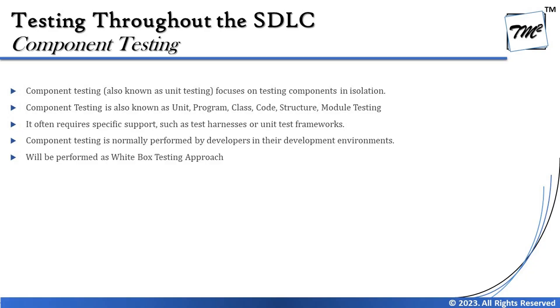Unit testing has several synonyms in real-time usage. Component testing is also known as unit testing, program testing, class testing, code testing, structure testing, module testing, and more. It mainly focuses on testing components in isolation — independently. We don't talk about integrations here; items like a name field or phone number field are tested independently, one item at a time, to verify feasibility against requirements.